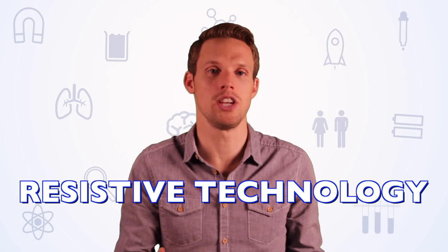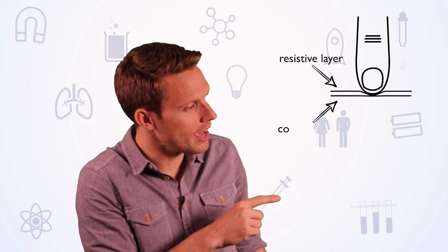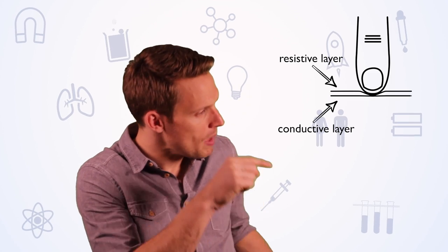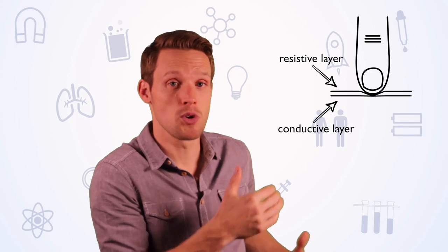Before the introduction of the iPhone, different phones used different types of touch screen tech. One that was very popular was called resistive technology. Quite simply, your finger would push two layers together. The top layer is called a resistive layer and the bottom layer is a conductive layer. And when the two of them were pushed together, that would change the local voltage and it'd be able to work out where you touched.